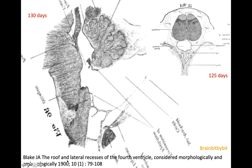These are images from Joseph Blake's article from 1900, in which he did a very extensive study on the roof and the apertures of the fourth ventricle. These are drawings of human embryos in the sagittal plane at 130 days. This is the medulla, this is the cerebellum — I have rotated the images from the original article. You can see the fourth ventricle here; this was the part of the ventricle that was ballooning into the subarachnoid space. At 130 days, Blake's pouch has already perforated but you can still see the ghost of it.